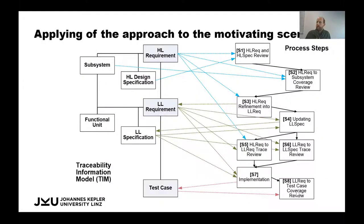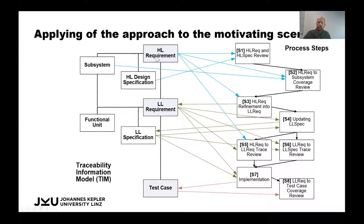Going back to the initial workflow and traceability information model, assume we have a status change of a high-level requirement — for example, from 'released' to 'in progress' or 'in editing.' With incremental constraint checking, we immediately know which process steps use this property in a constraint. It might even be that no constraints check the status of that high-level requirement, so no re-evaluation is needed. Perhaps only three steps contain relevant constraints, and only those are re-evaluated.